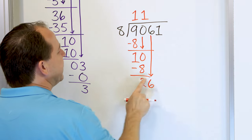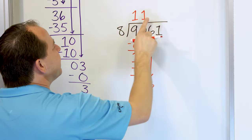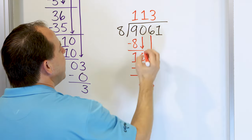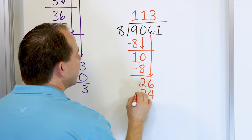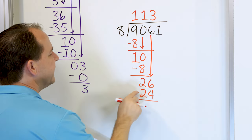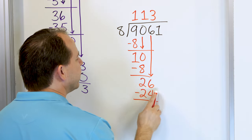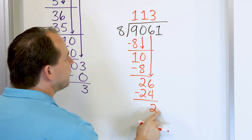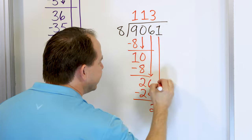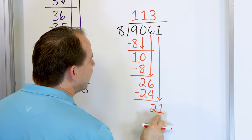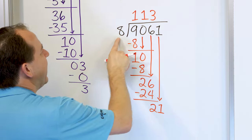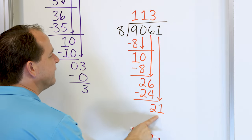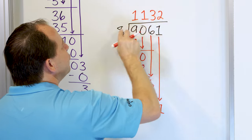We know that 8 times 3 is 24, and 8 times 4 is 32 — too big. So we go back to 8 times 3, which is 24, and subtract. 26 minus 24: 6 minus 4 is 2, 2 minus 2 is 0. After we subtract, grab the next digit, which is a 1, and now we have a 21.